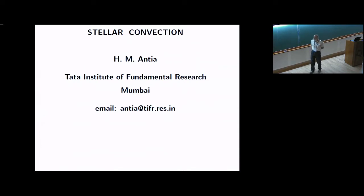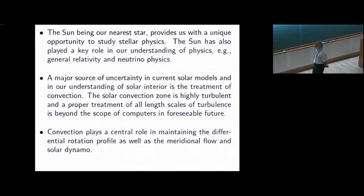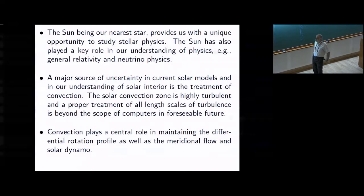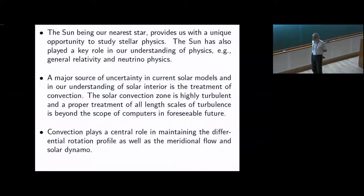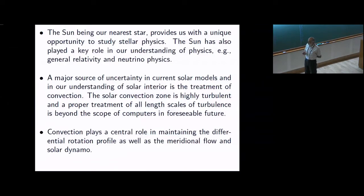Before we start with the stellar, of course we'll start with the Sun. The Sun, being the nearest star, provides us with a unique opportunity to study other stars and stellar physics. The Sun has also played an important role in understanding physics, starting from general relativity, nuclear physics, neutrino physics, and so on. A major source of uncertainty in current solar models is the treatment of convection. The solar convection zone is highly turbulent, so proper treatment is not possible. Convection also plays an important role in maintaining the differential rotation profile, meridional flow, and solar dynamo. Yesterday we heard an interesting talk about the solar dynamo.